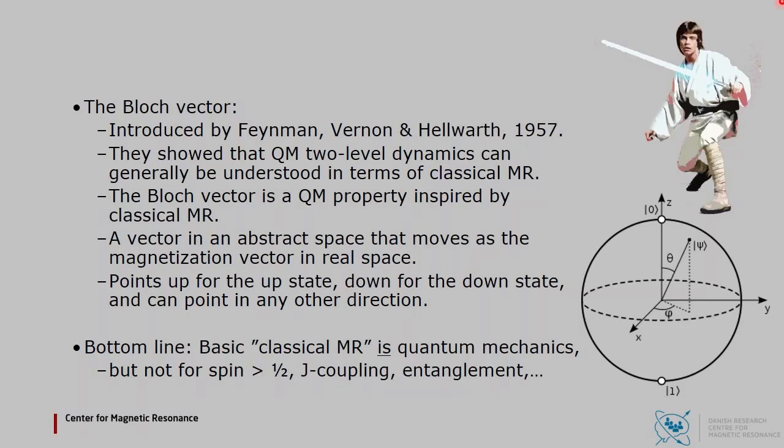So the bottom line here is that the so-called classical description is simultaneously a quantum description, but it has limits. You may get in trouble for spin larger than one-half, or for coupled nuclei, for example.